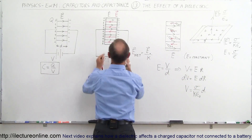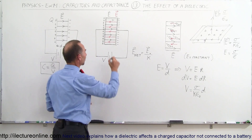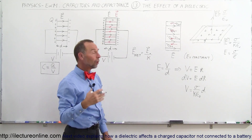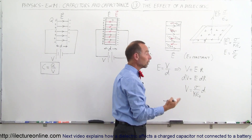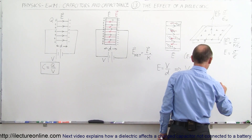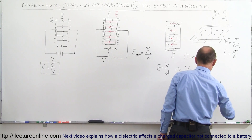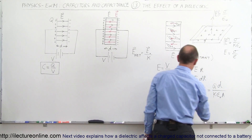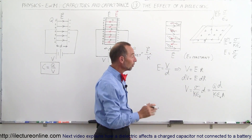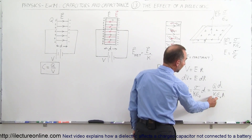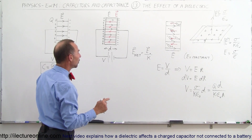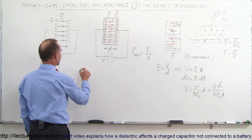Now that we have the equation for the electric field inside a capacitor with a dielectric, we can substitute back. The separation distance between the capacitor plates is d, and the charge density σ equals charge Q divided by area A. So the potential difference across the plates becomes V = Q × d / (K × ε₀ × A). Without the dielectric, that same expression holds but without K.